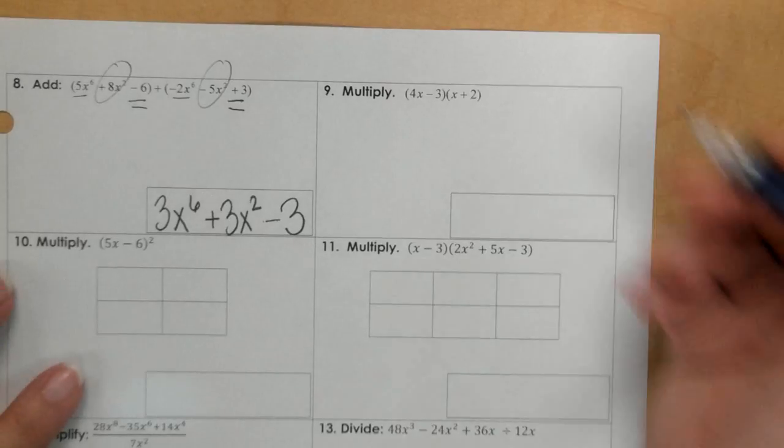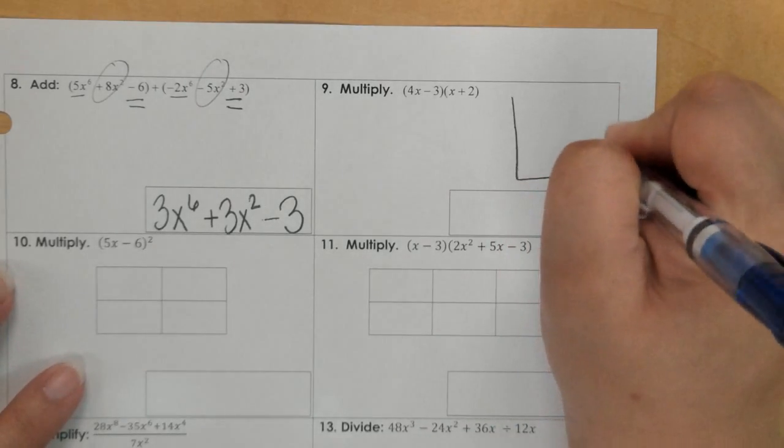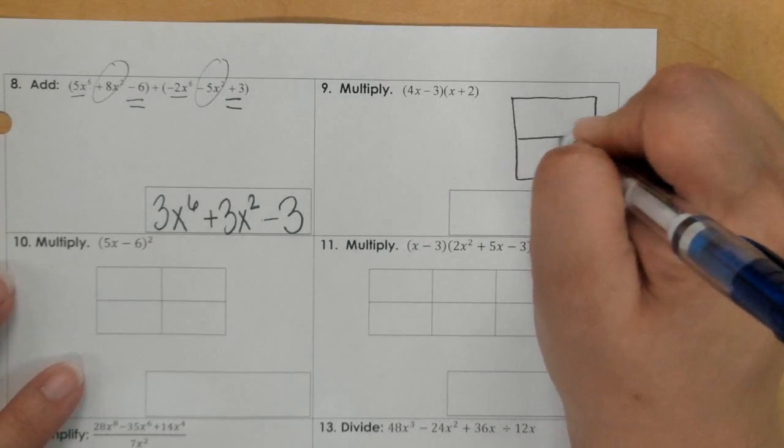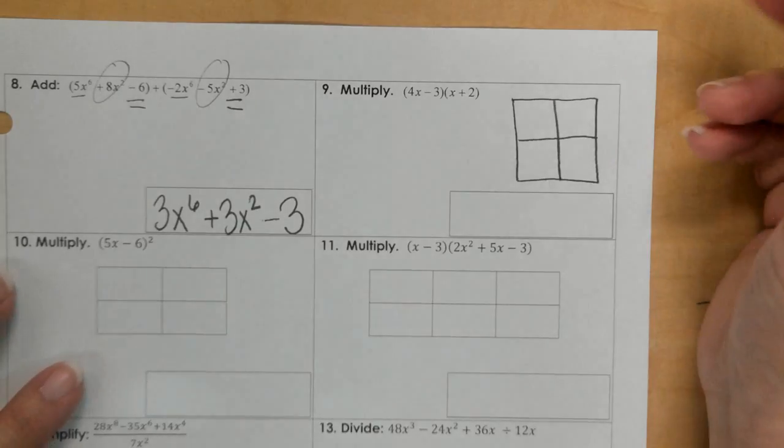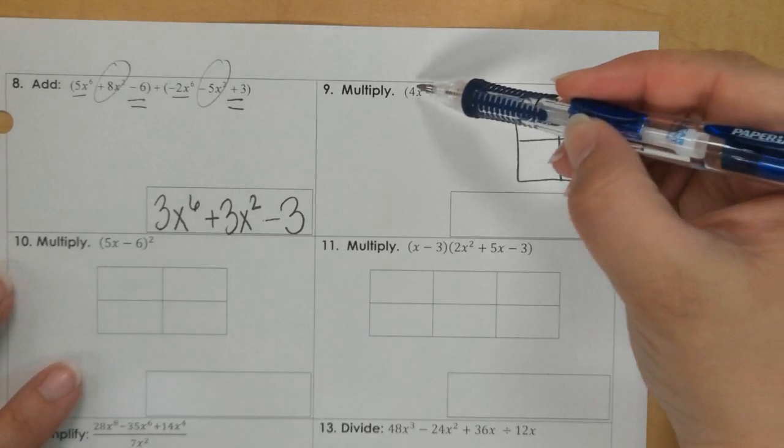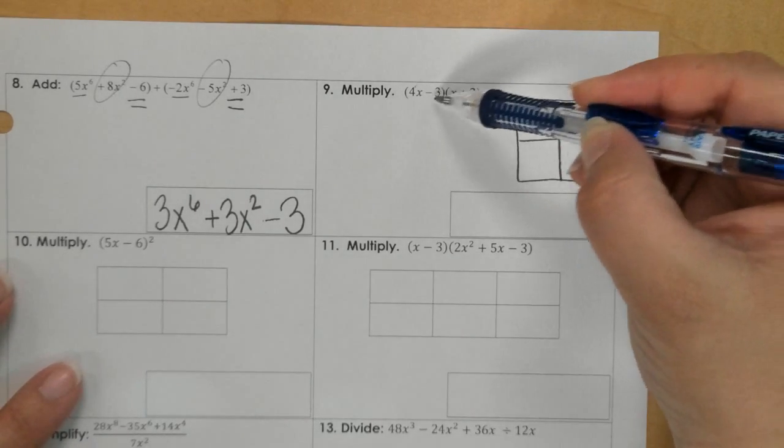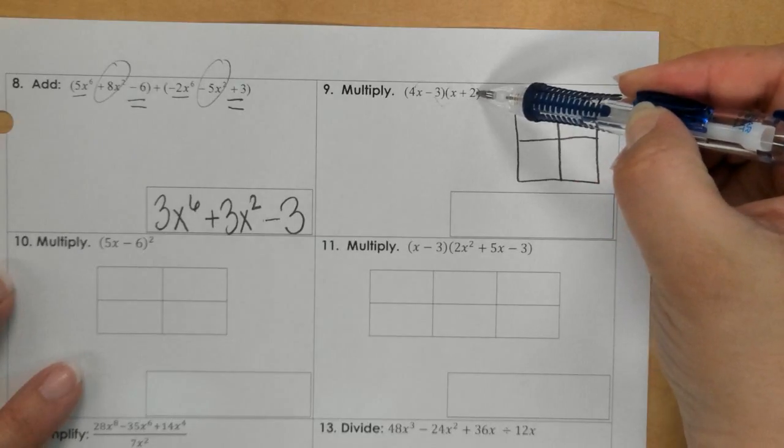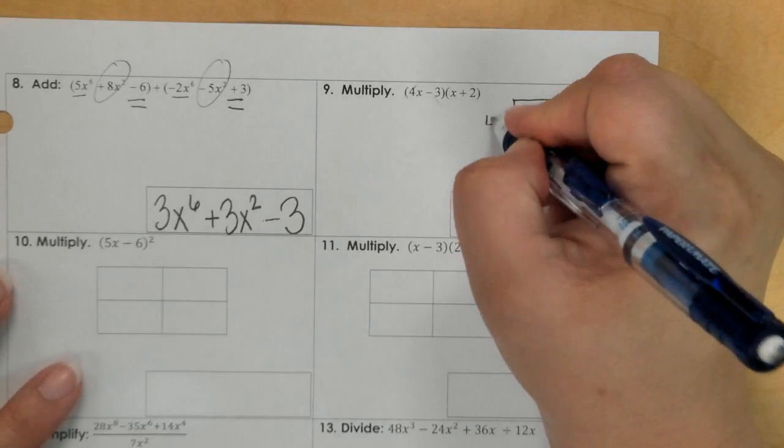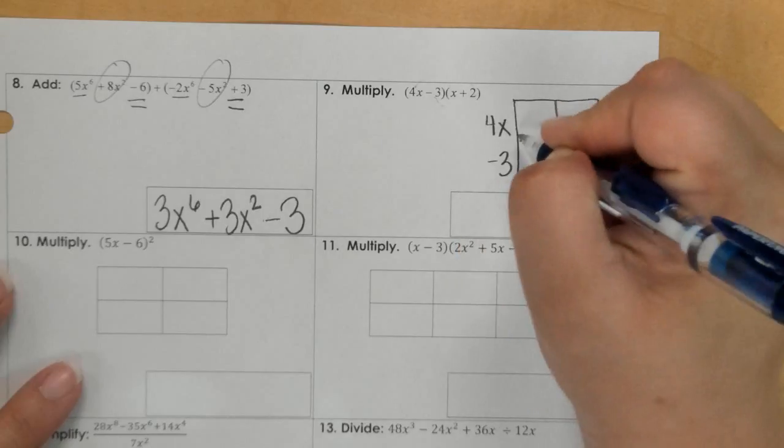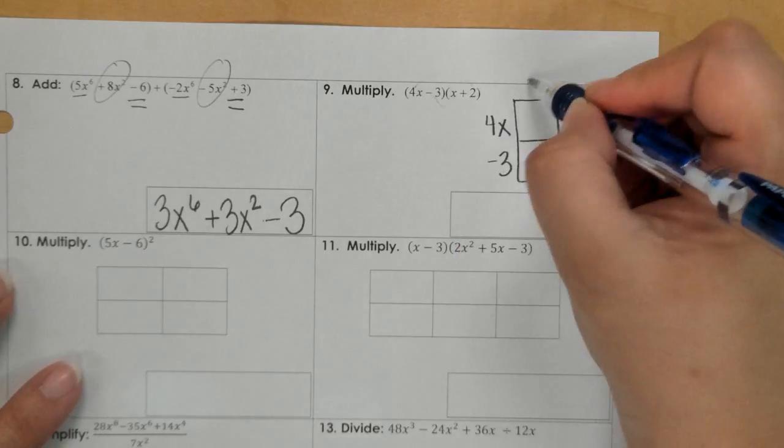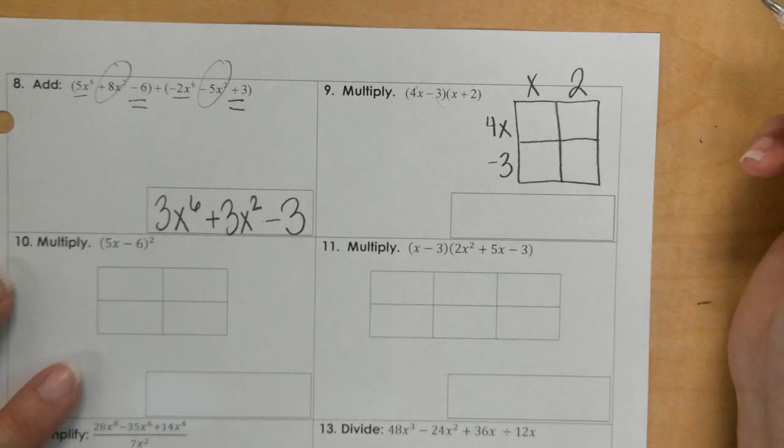For number 9, I would go ahead and draw a 2 by 2 square. Remember, you can use FOIL, which is just the distributive property. Or you could go ahead and fill in the 2 by 2 over here. Don't forget your negative 3. Your signs are important.